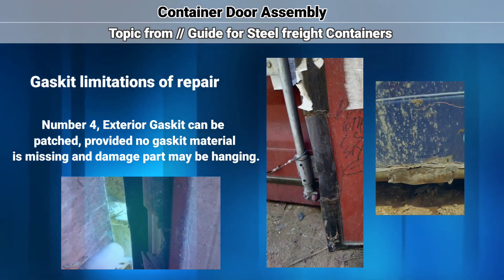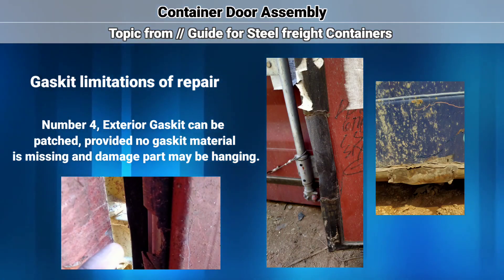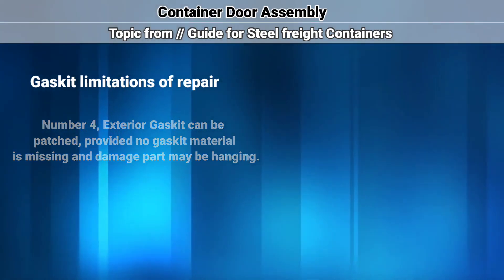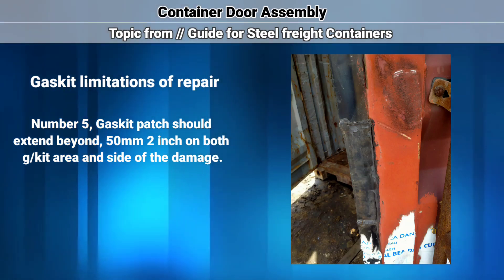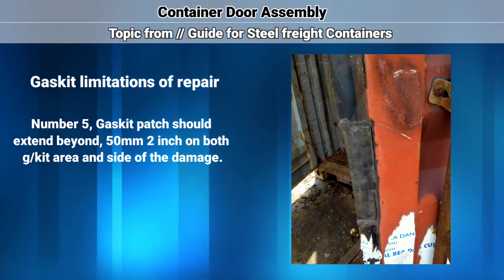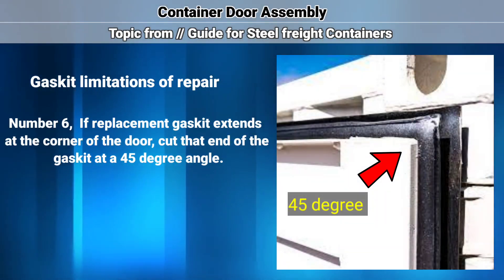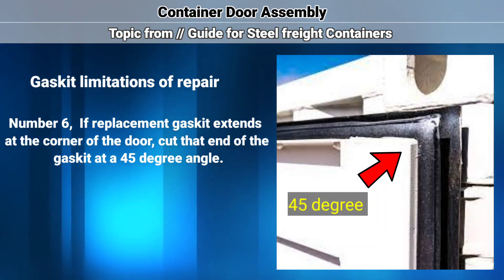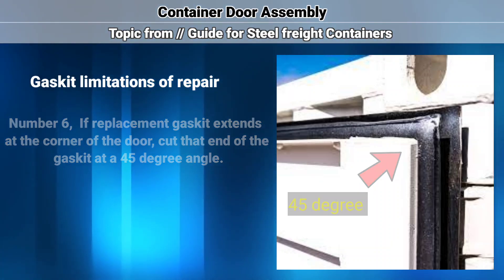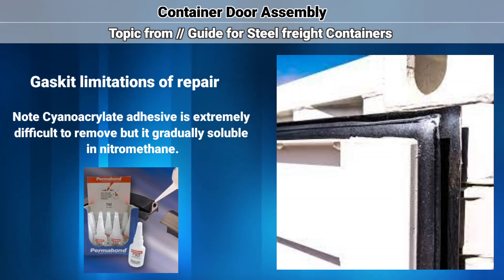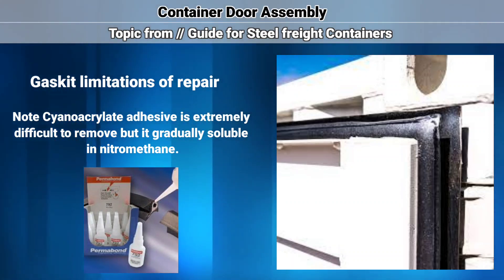Number 4: exterior gasket can be patched, provided no gasket material is missing and the damaged part may be hanging. Number 5: gasket patch should extend beyond 50 mm (2 inch) on both sides of the damaged area. Number 6: if a replacement gasket extends at the corner of the door, cut that end of the gasket at a 45 degree angle. Note: cyanoacrylate adhesive is extremely difficult to remove, but it is gradually soluble in nitromethane.